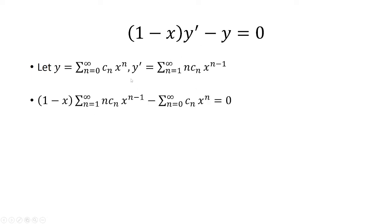Now replace y and y' into the equation. And now we're going to distribute the sum to both the 1 and the negative x. When I multiply it by negative x, this exponent of x becomes x^n.